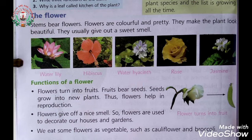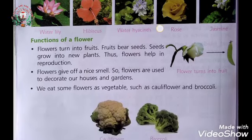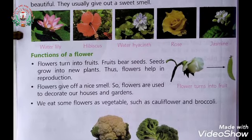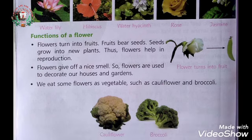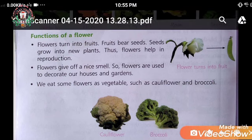Flowers usually give out a sweet smell. There are different colors of flowers. Function of a flower: flowers turn into fruits, and fruits bear seeds, so flowers help in reproduction. Flowers give a nice smell, so flowers are used to decorate our houses and gardens.